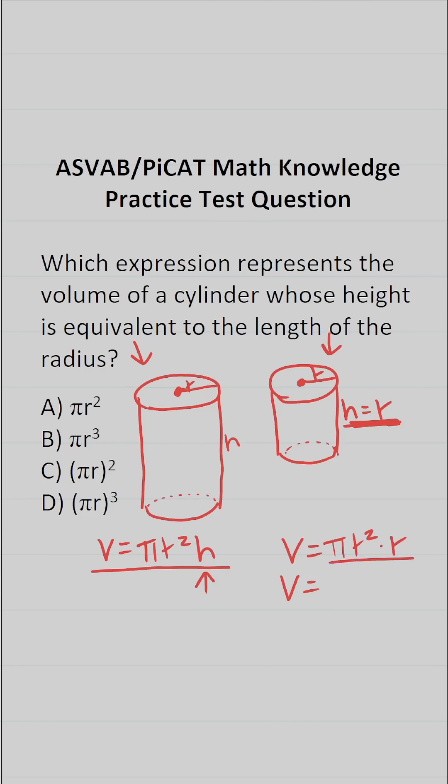Since this isn't an answer choice, that must mean we can simplify this a little bit further. And we can. We have R squared times R. This is the same thing as R to the first power. And we can combine these using the product rule, which says if you have A to the M times A to the N, that's equal to A to the M plus N. So this becomes R to the 2 plus 1, which is R to the third.